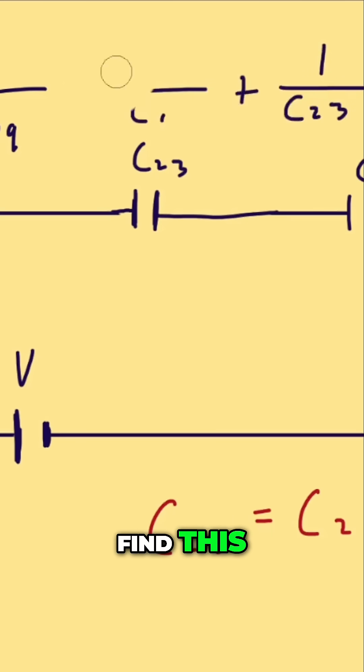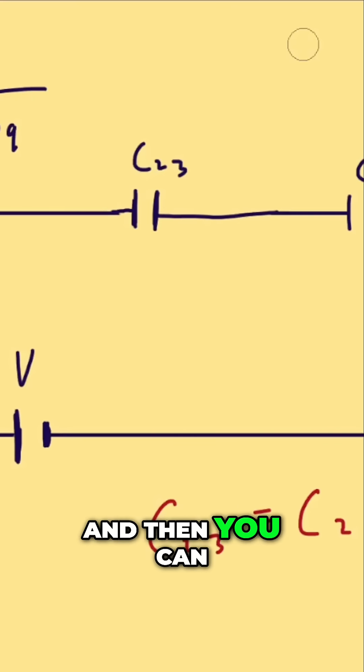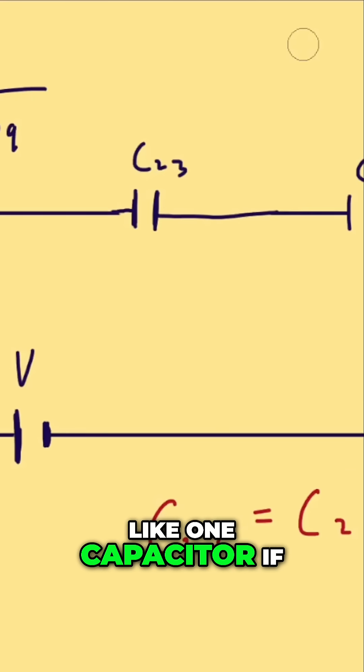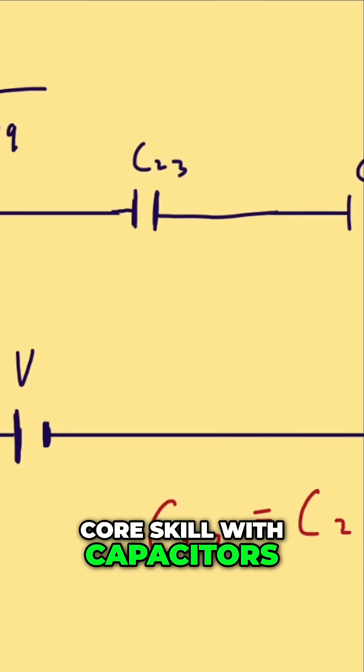And then once you find this, you can replace these two capacitors. And then you can treat the entire diagram like one capacitor if you only care about total charge and voltage. So this is the core skill with capacitors.